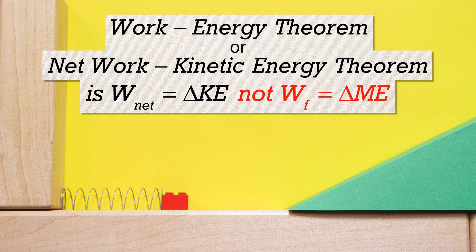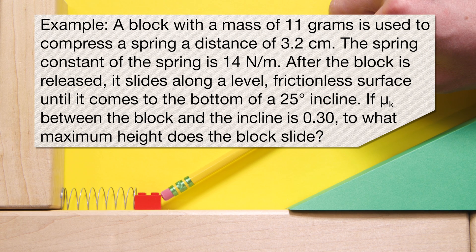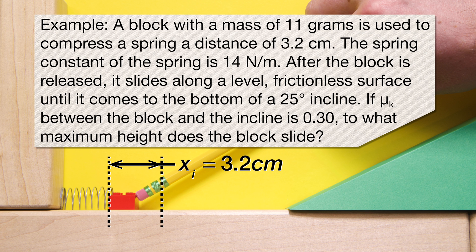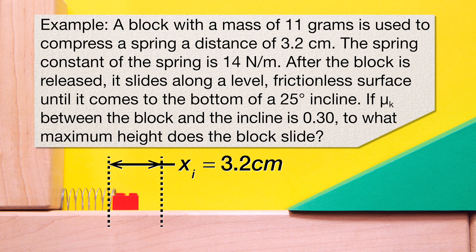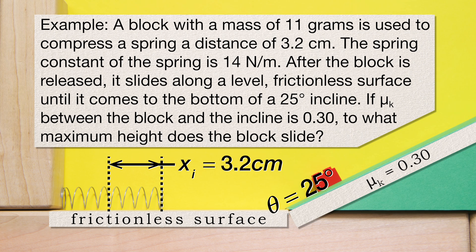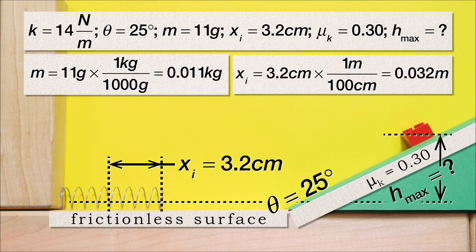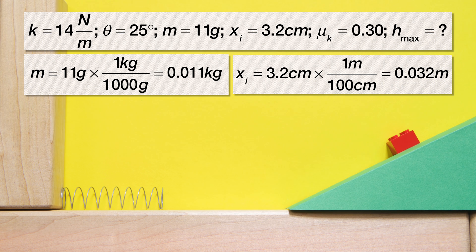The example is: a block with a mass of 11 grams is used to compress a spring a distance of 3.2 centimeters. The spring constant of the spring is 14 newtons per meter. After the block is released, it slides along a level frictionless surface until it comes to the bottom of a 25-degree incline. If the coefficient of kinetic friction between the block and the incline is 0.30, to what maximum height does the block slide? We still list our known values and convert to base SI units, but now we are going to use the net work kinetic energy theorem.